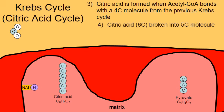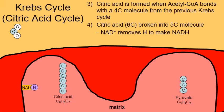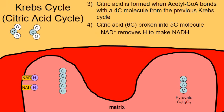The six-carbon citric acid is broken down into a five-carbon molecule. In the process, NADH is created: NAD along with an enzyme helps break down the citric acid, producing NADH. Some carbon dioxide waste is also generated — this is why citric acid goes from a six-carbon to a five-carbon molecule.